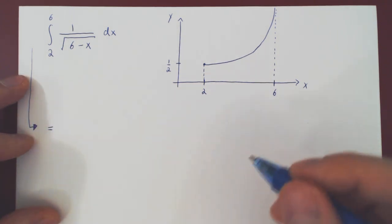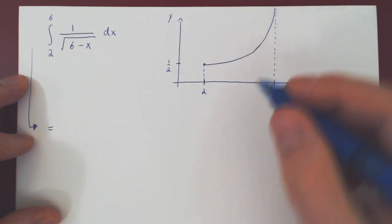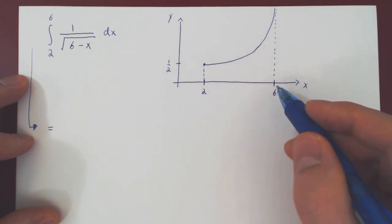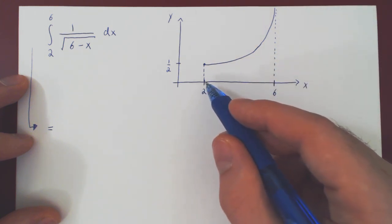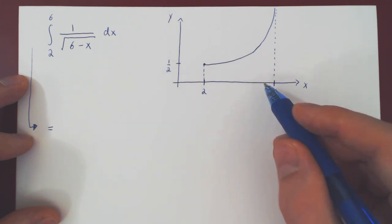Well, let's see. As we have just said, the first step is to avoid the problem. We're trying to integrate from 2 to 6.